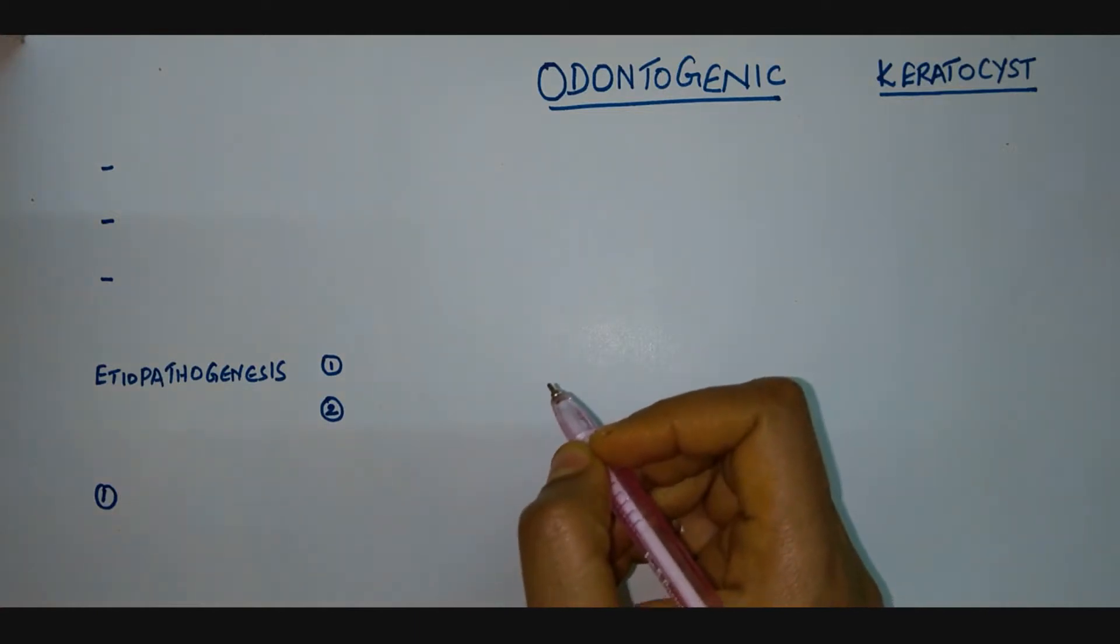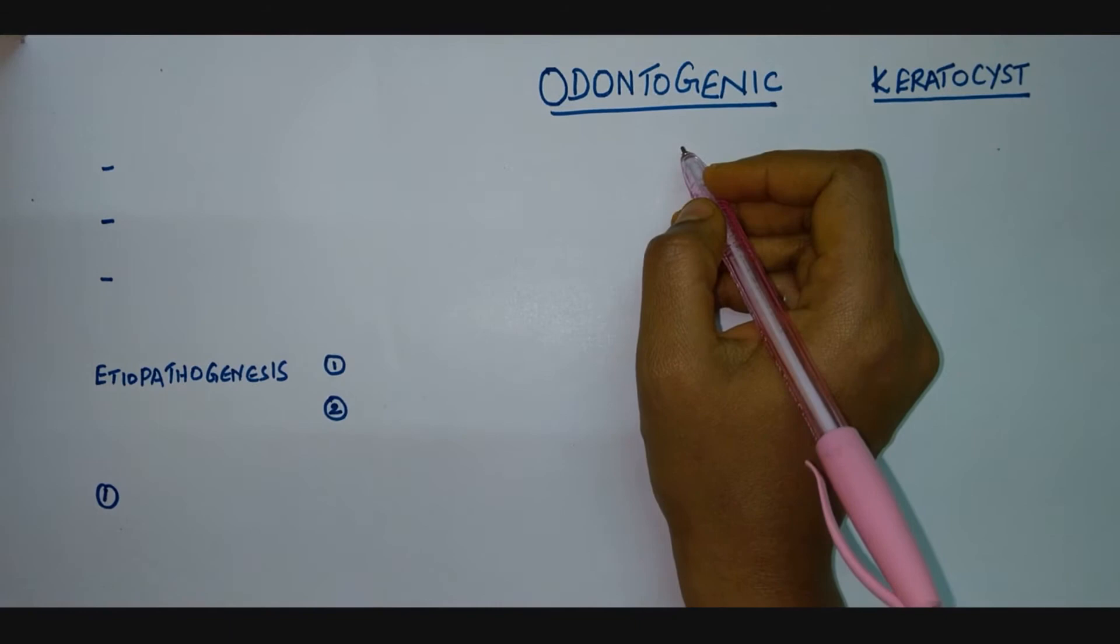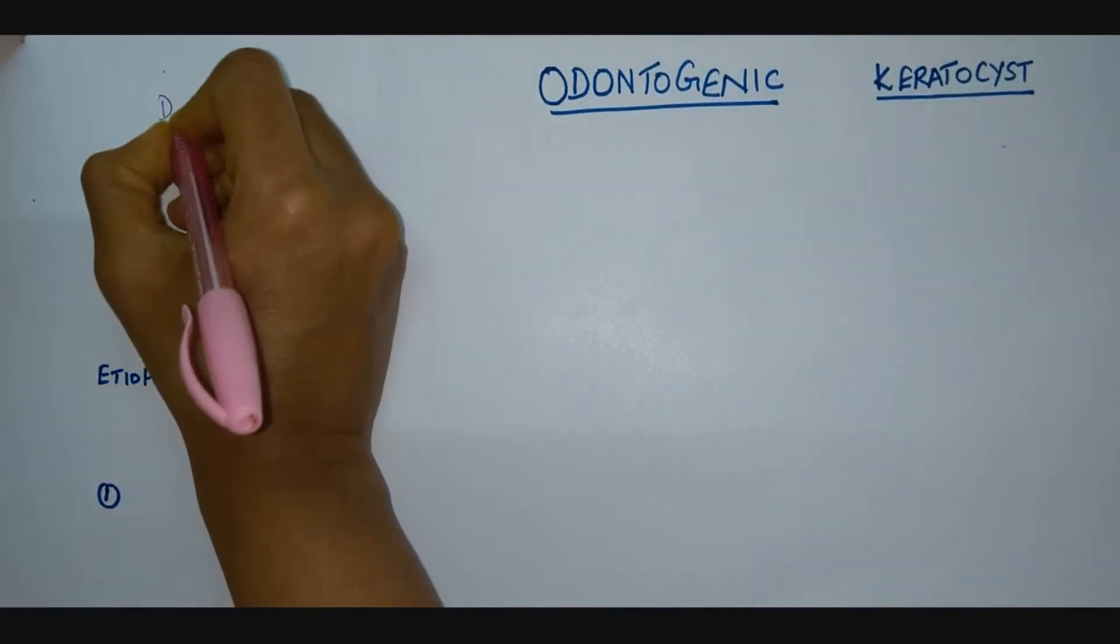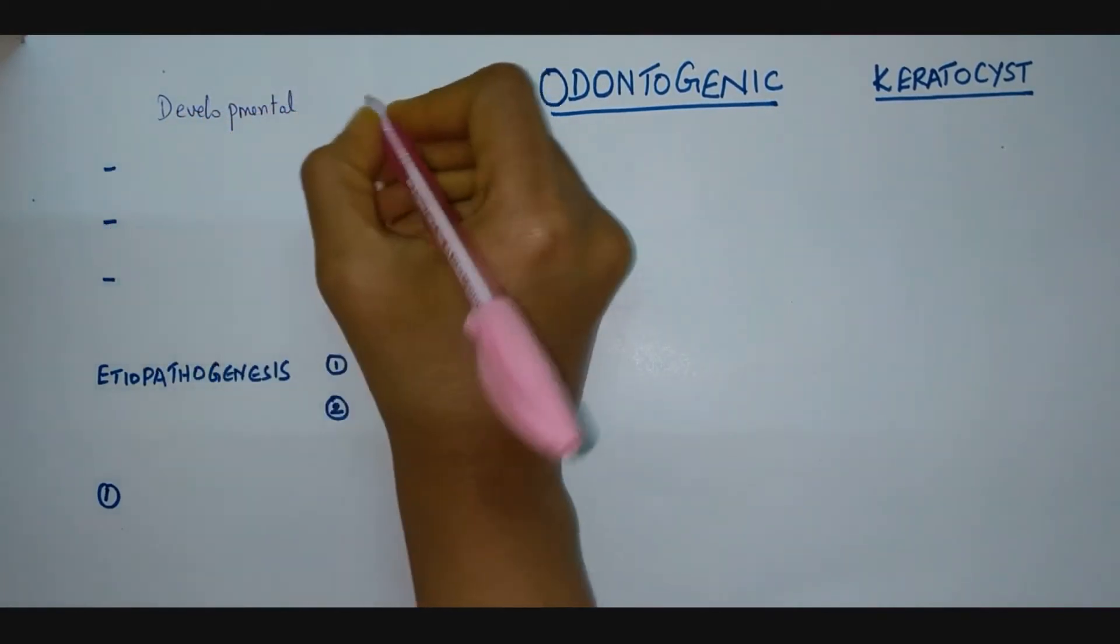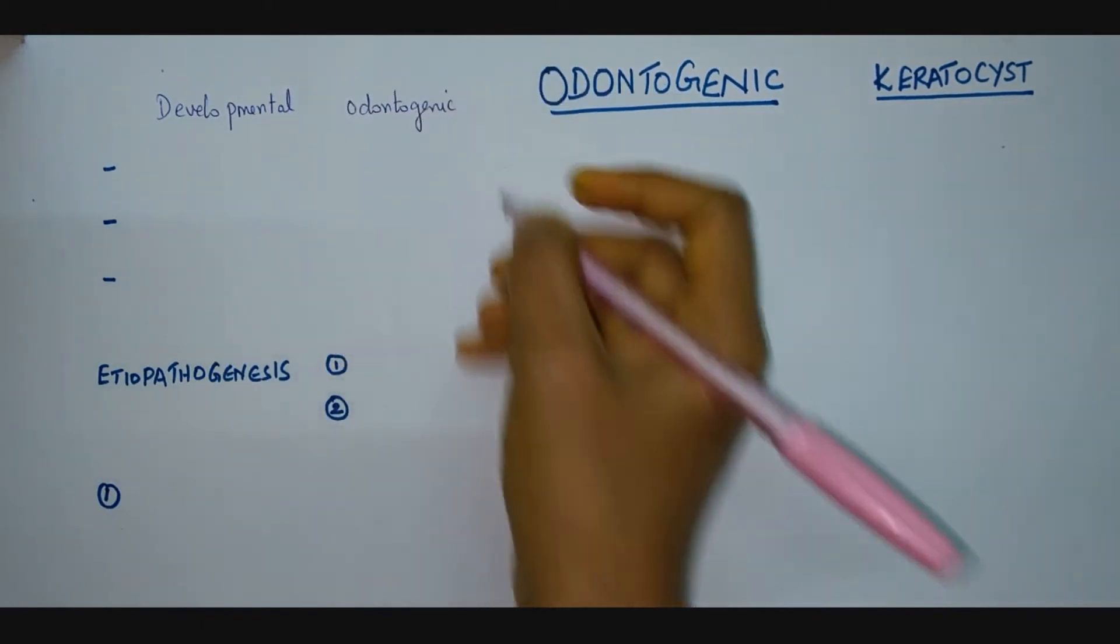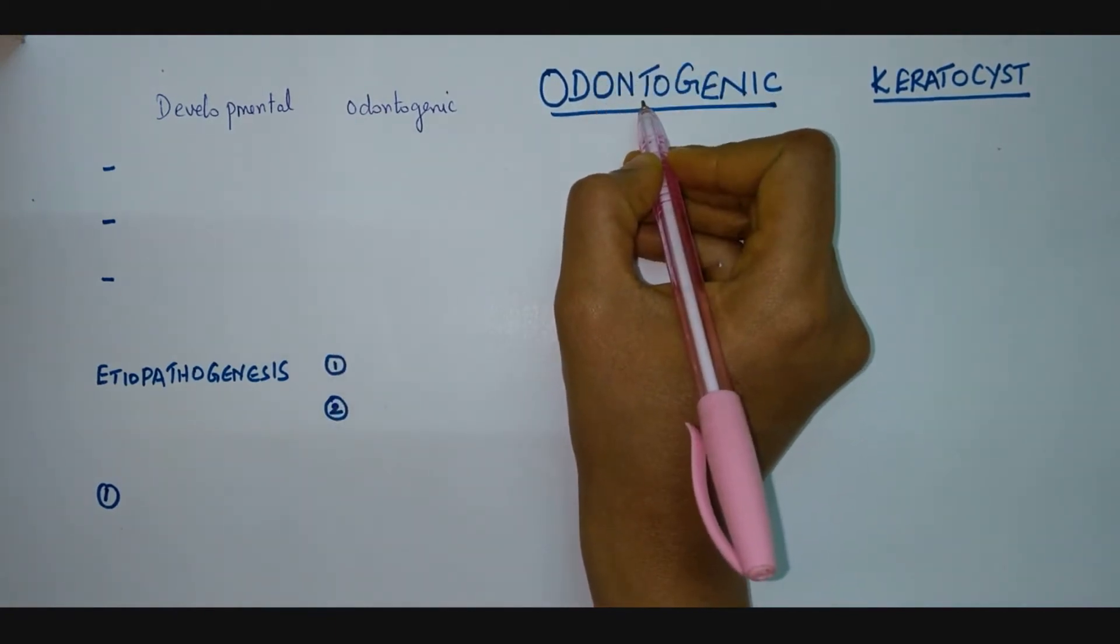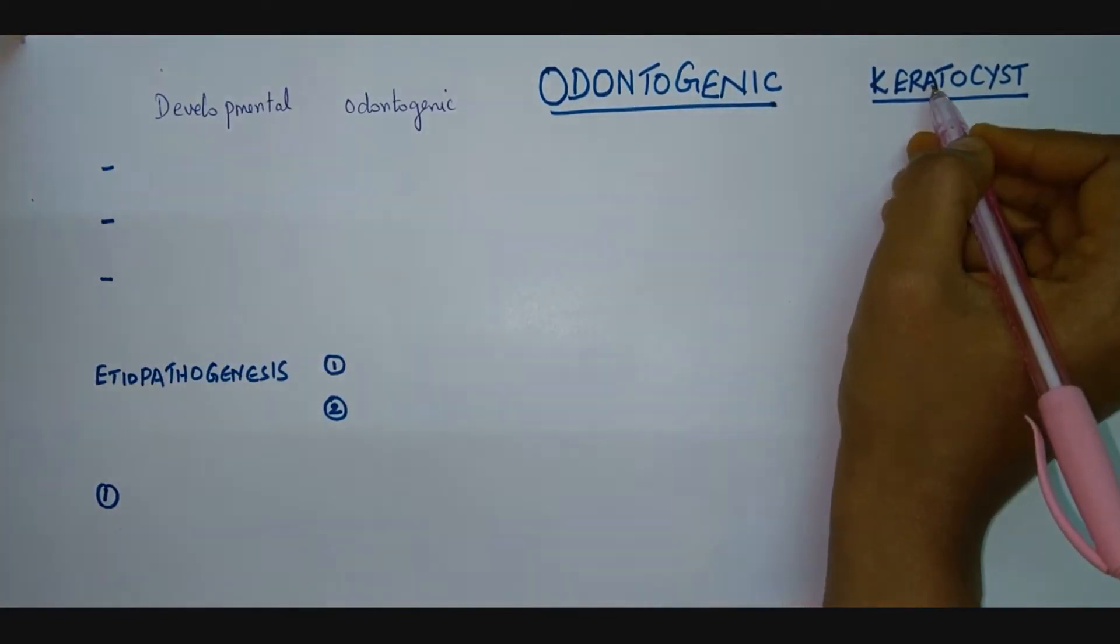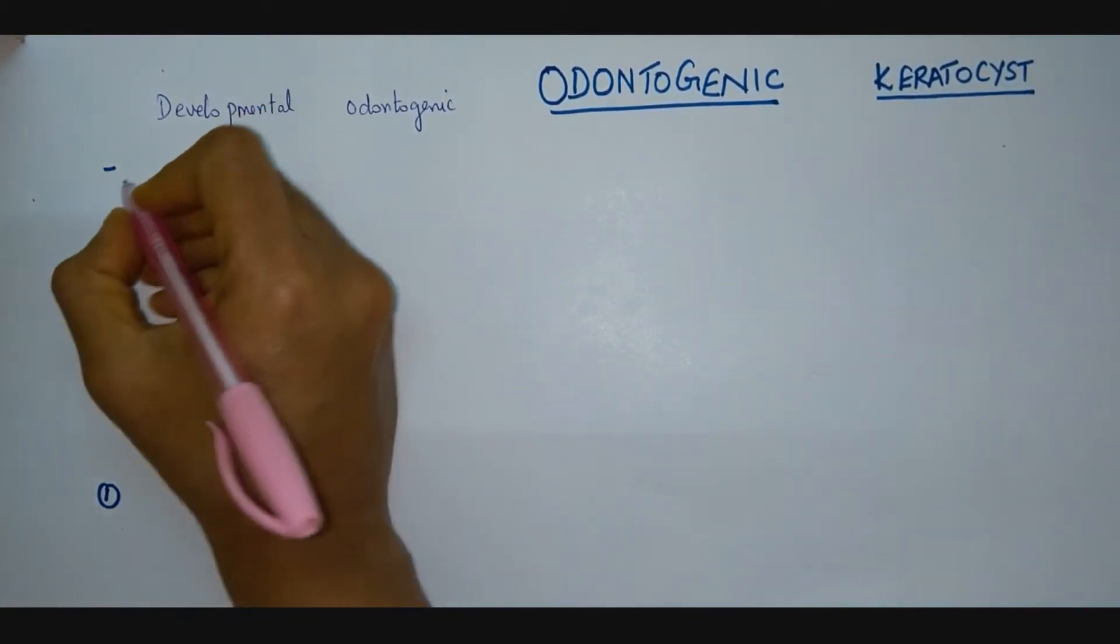Hi everyone, in this video we will be seeing about odontogenic keratocyst. This is a developmental odontogenic cyst. As the name implies, we can understand that the cyst has odontogenic origin and also it contains keratin within its cystic cavity.